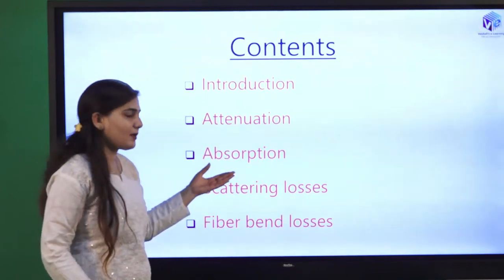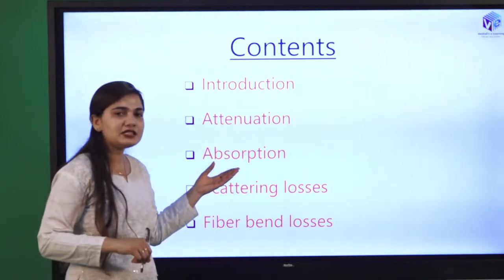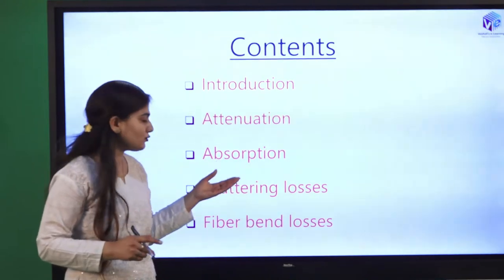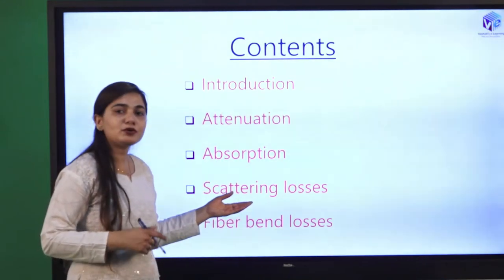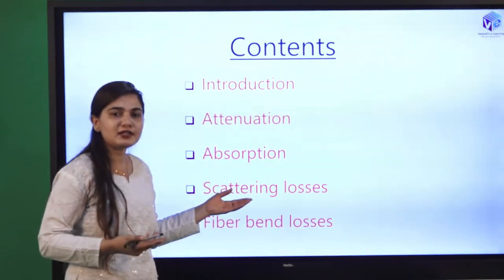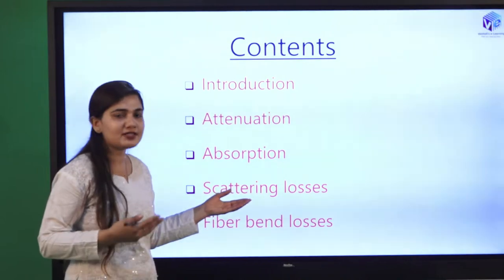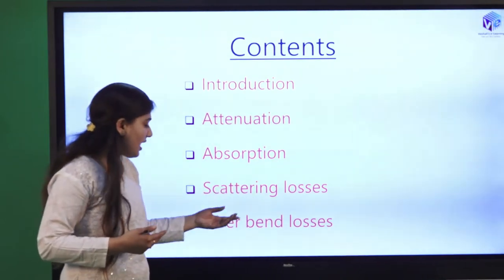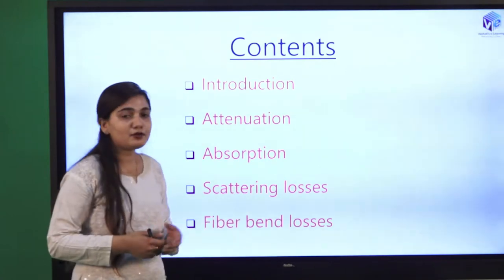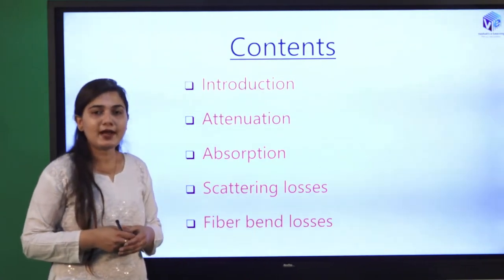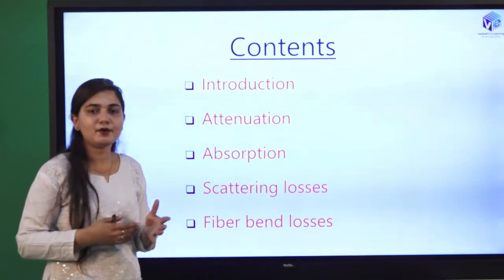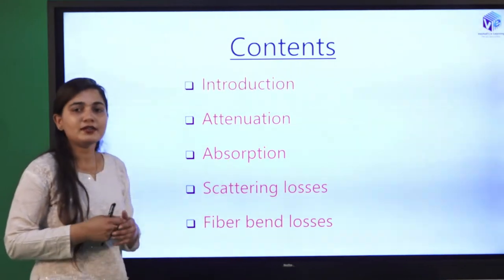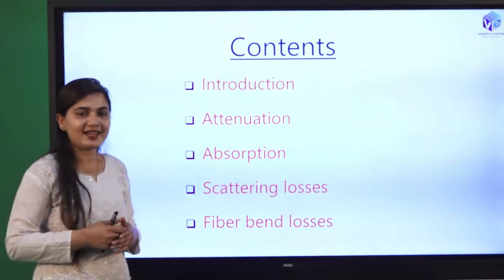We are going to talk about absorption — both extrinsic and intrinsic absorption. We are going to talk about the various types of scattering losses: Raman scattering losses and Mie scattering losses. After that we are going to talk about the fiber bending losses. Due to the bending of the fiber there are also some losses, and we are going to talk about fiber bending losses in detail.